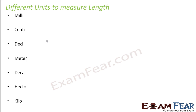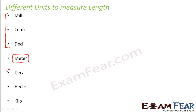You might ask why we have so many units to measure the same thing — I'll explain that shortly. For now, you need to remember the sequence. One easy way to remember it is: milli, centi, deci — then deca, hecto, kilo. Meter is at the center, with milli, centi, deci above it and deca, hecto, kilo below it.